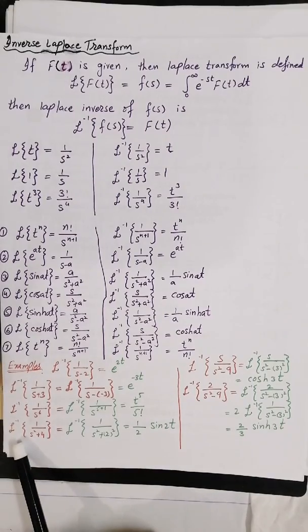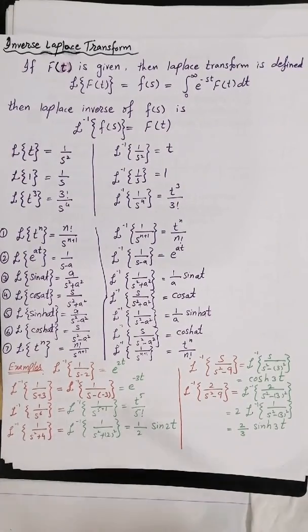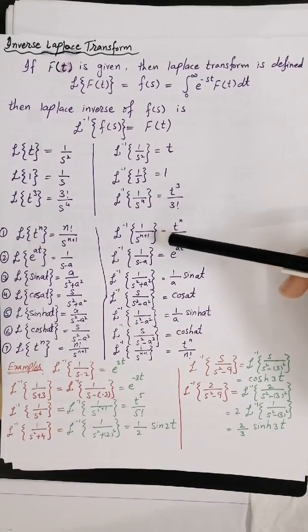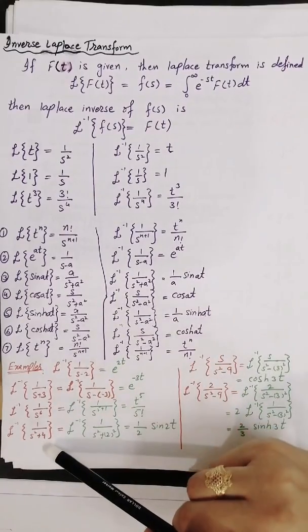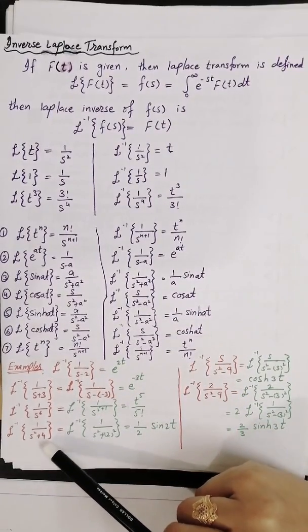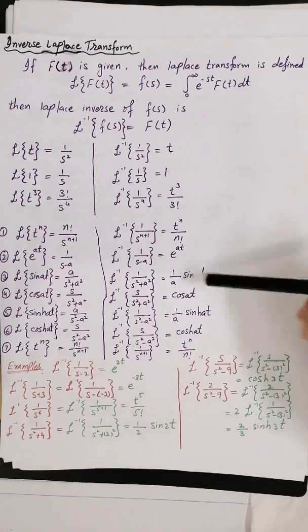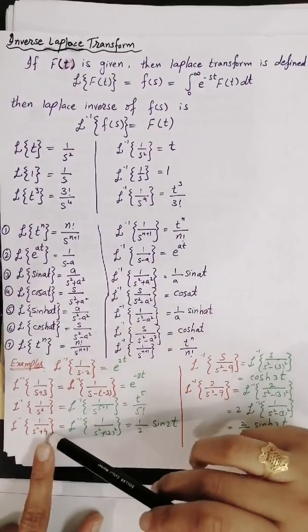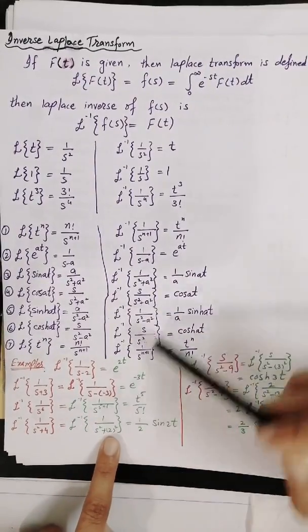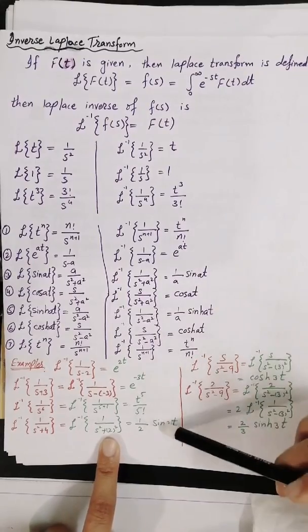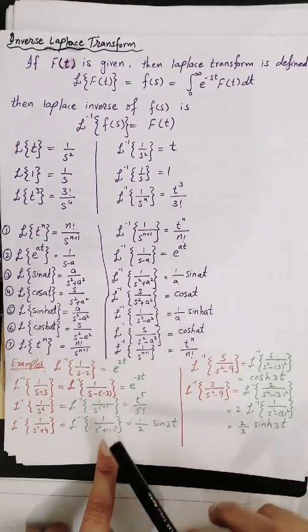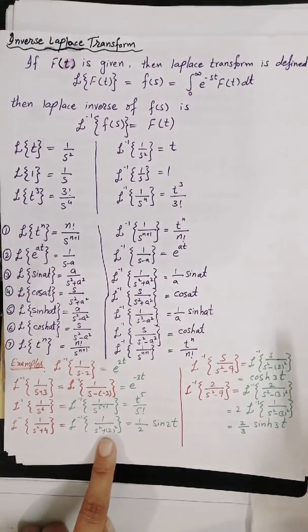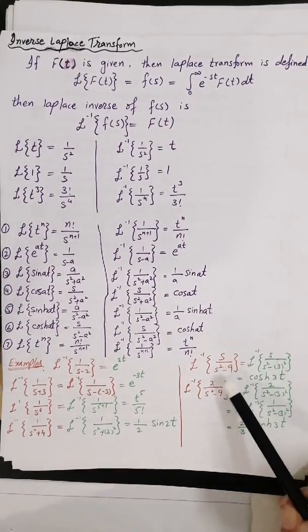Find the Laplace inverse of 2 over (s² + 4). Looking at this term, s² + 4 means 4 equals a², so a equals 2. We match it with the formula 1 over (s² + a²), giving 1 over a times sin(at). So the Laplace inverse of 2 over (s² + 4) equals 2 times 1 over 2 times sin(2t), which equals sin(2t).